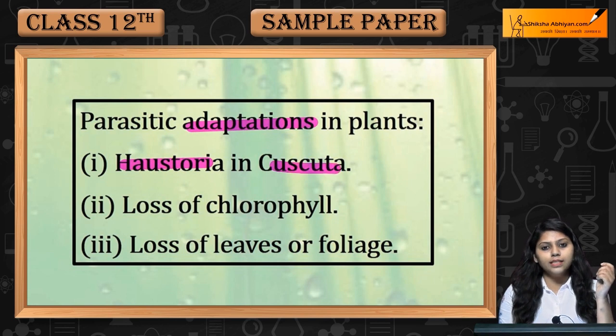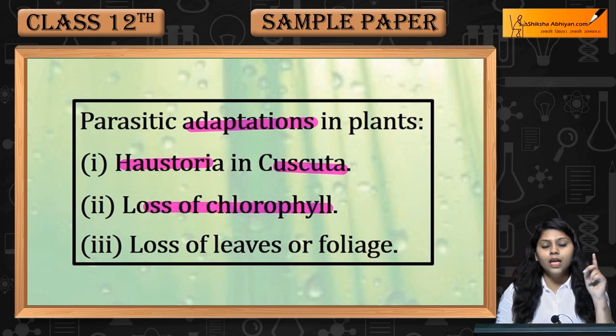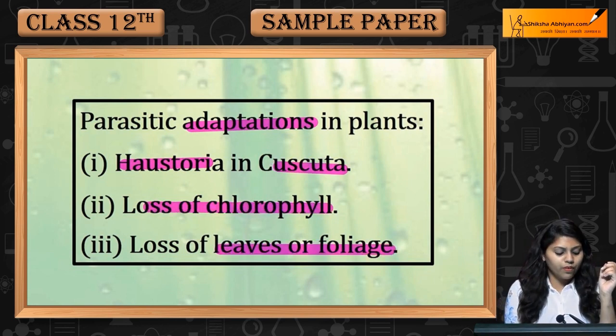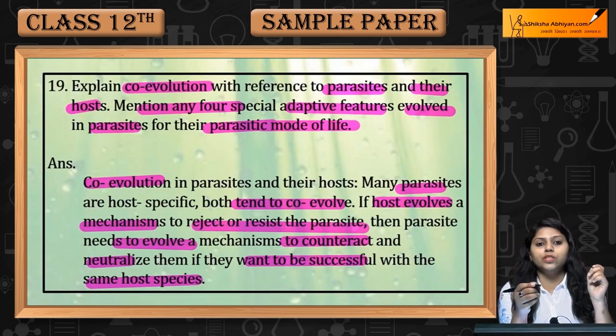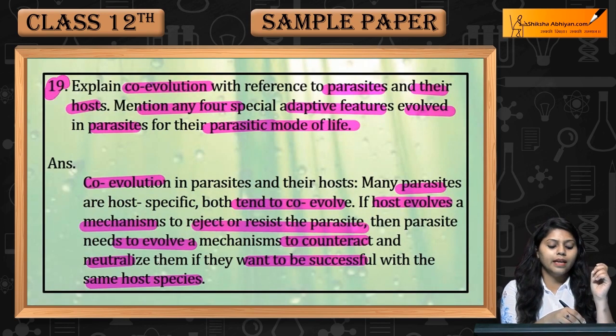Parasitic adaptations in plants include: haustoria in Cuscuta; loss of chlorophyll; and loss of leaves or foliage. This concludes question number 19.